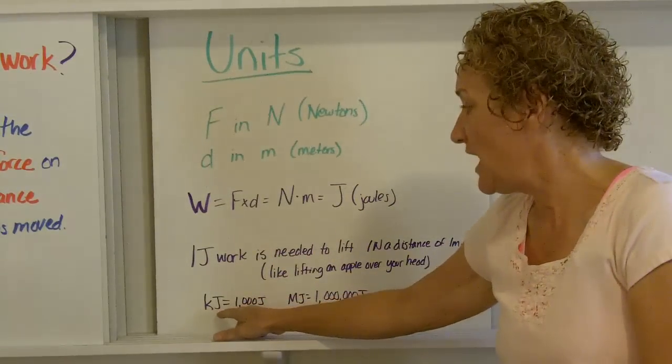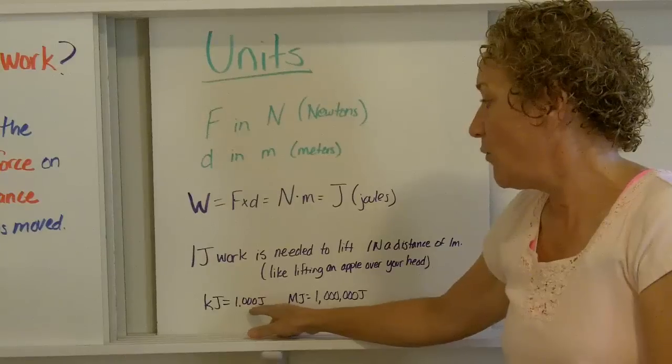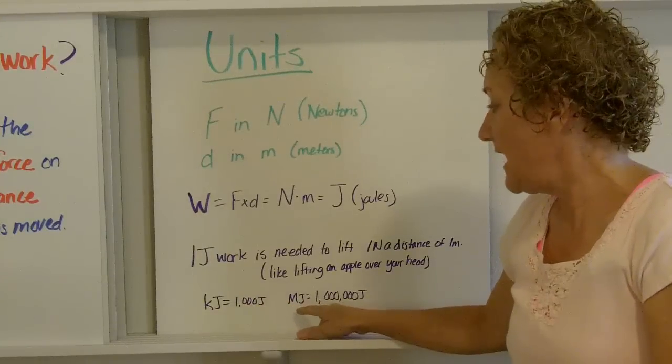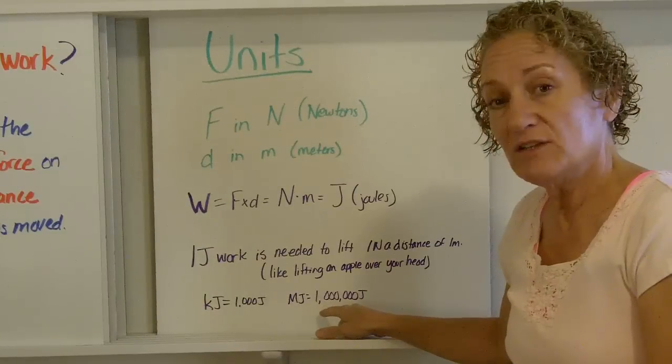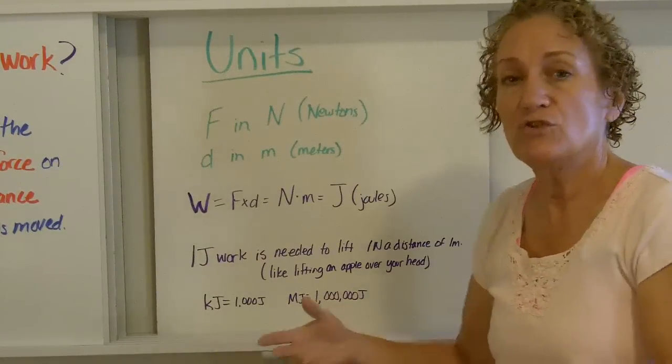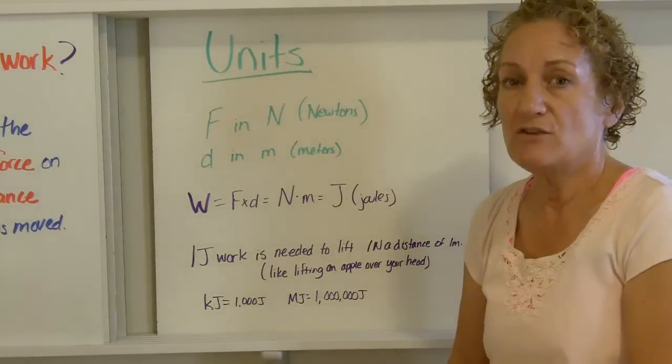K joule, KJ. K means kilo. Kilojoules, 1,000 joules. MJ, mega joules. Mega means a million, so it's a million joules. So joules are the way that we measure work in the scientific community. That's the unit we use.